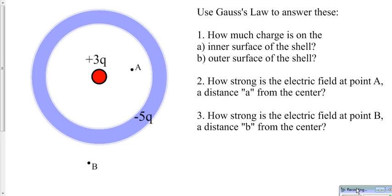And then the shell itself I rendered in blue to indicate that it has a net negative charge on it of minus 5Q. So those charges are not the number of Coulombs, they're just relative charges. There's almost twice as much negative charge as there is positive charge, and of course, it's opposite in sign.